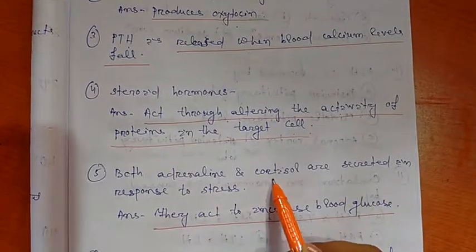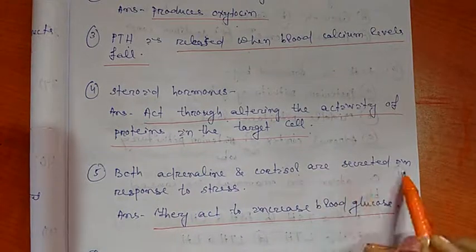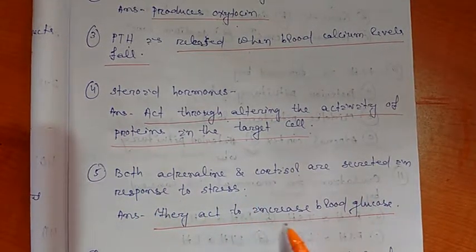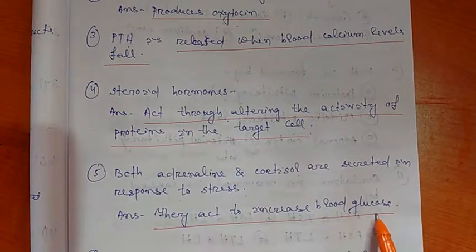Both adrenaline and cortisol are secreted in response to stress. They act to increase blood glucose.